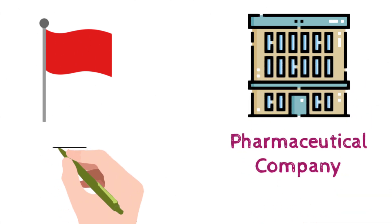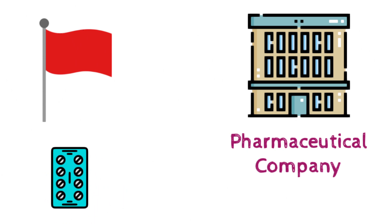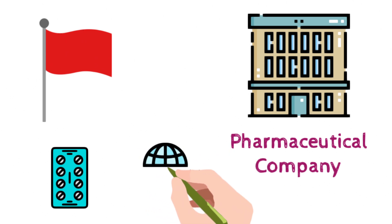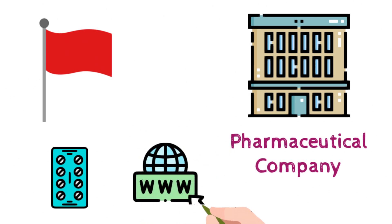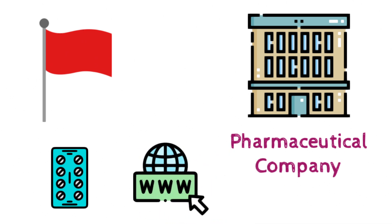To do that, you need to check the label of the drug, on which you will get a toll-free phone number of the manufacturer Pharma Company. If it's not provided on the label, you can visit the website of that particular Pharma Company. Once you get the phone number, you can simply dial in and report the above scenario to the manufacturer.